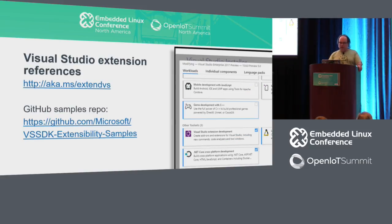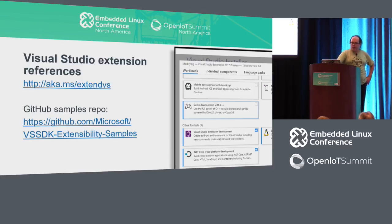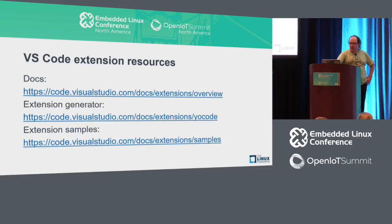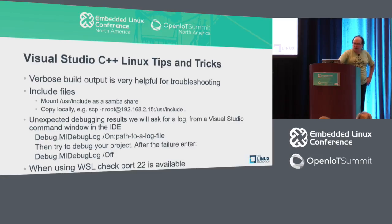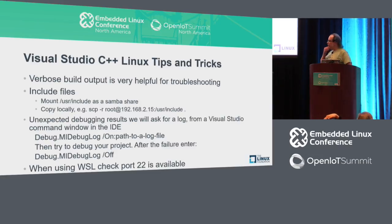Here are some references for Visual Studio extensions — the slides are online so you've got all those links. I didn't cover anything about VS Code extensions, but I provided that as a resource as well so you can see how to create Visual Studio Code extensions. And some tips with the Linux workload in general: verbose build output is really helpful for troubleshooting. In the quick launch window in the upper right, you can type the word verbosity to get to the tools options where the build output options are, and turn that up to normal or detailed. You'll then see the exact GCC commands being emitted.